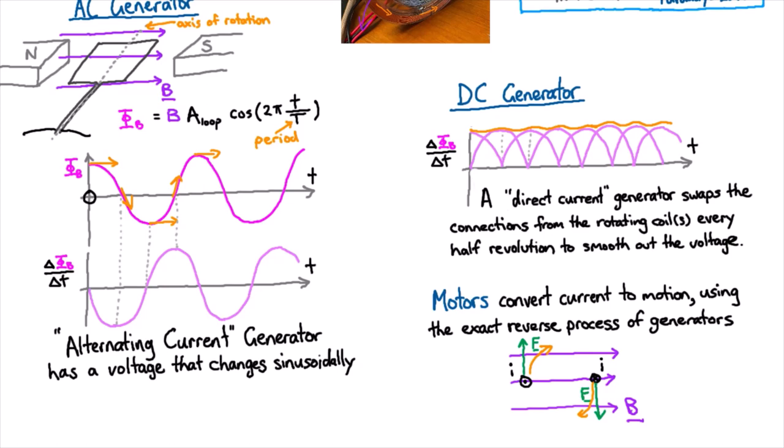If it's a DC motor, then the current coming in is constant. But we use a special tool to swap which wire it's connected to each half turn and then we get the same effect as the alternating current. And that's how a DC motor works.